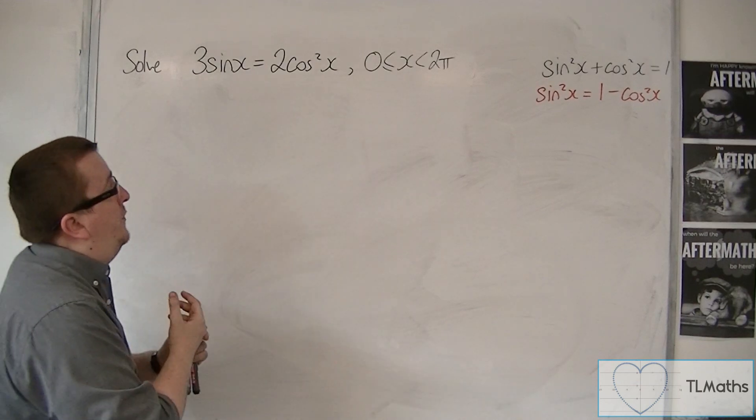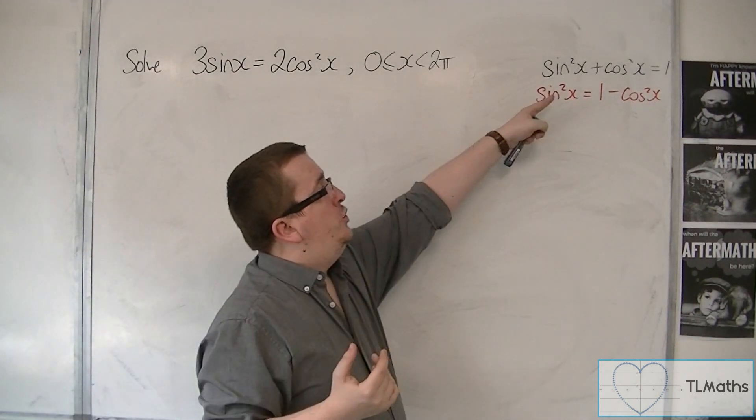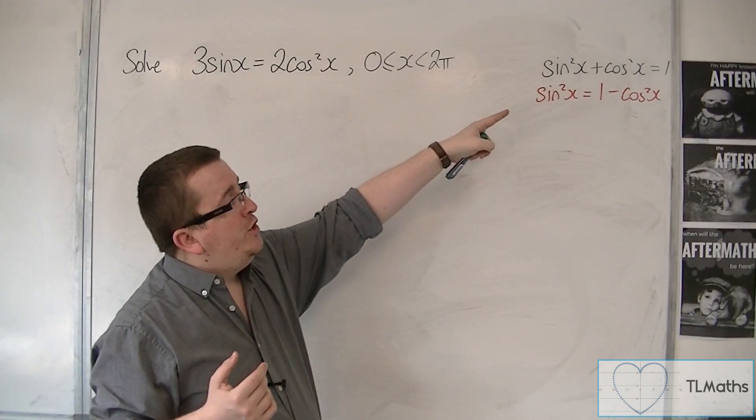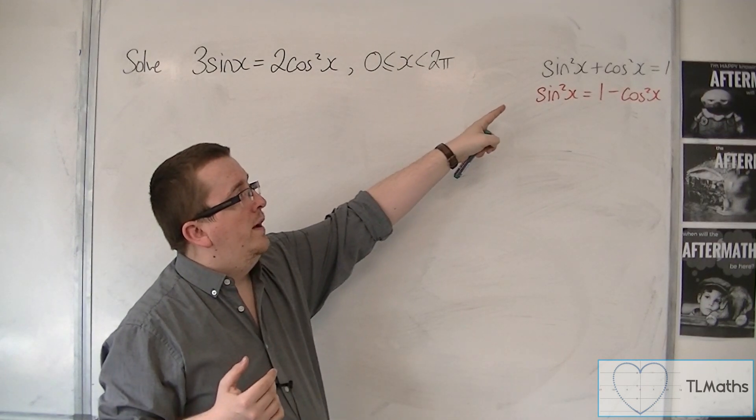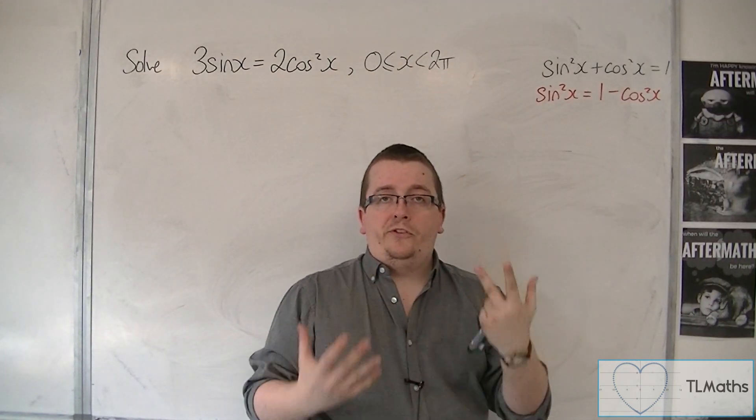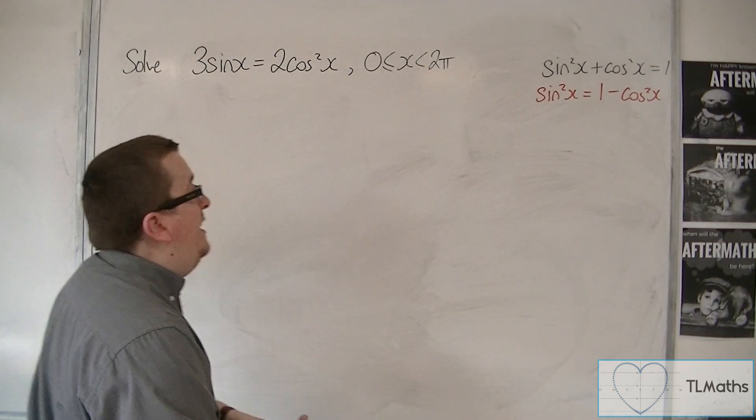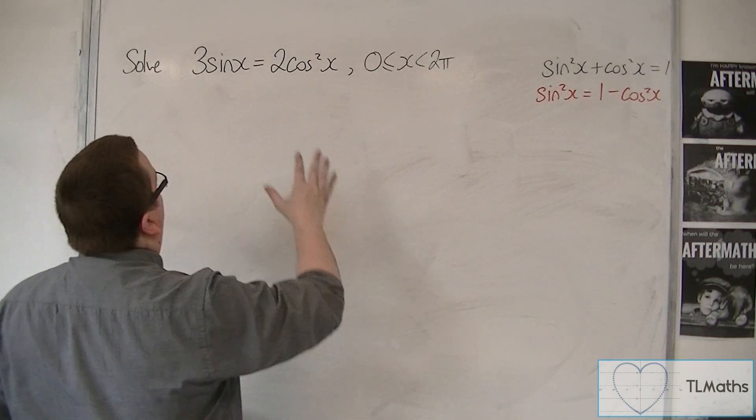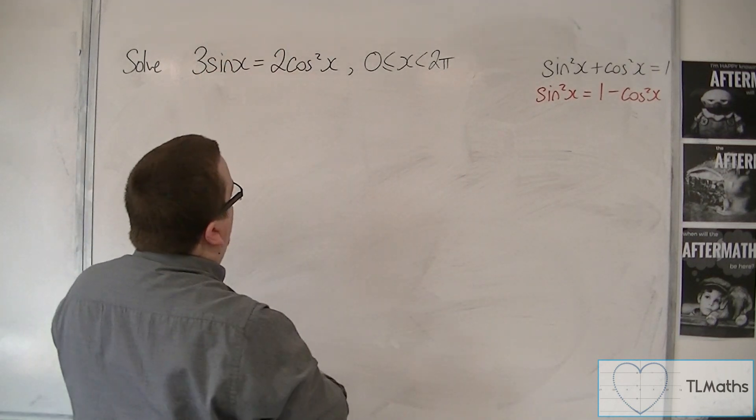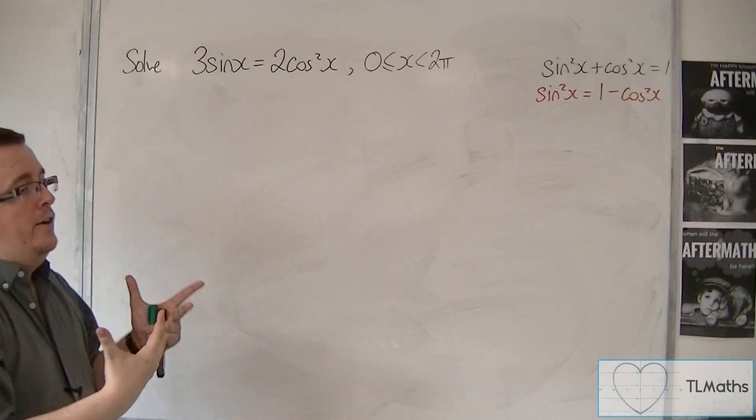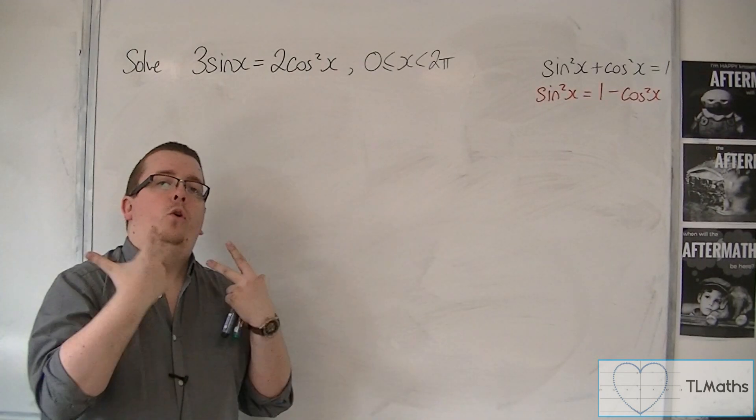In the previous video, I rearranged the trigonometric equation sine squared plus cos squared equals 1 to get a replacement for sine squared. If I look at this equation, I have a sine x and a cos squared. I need to have all sine x or all cos x.